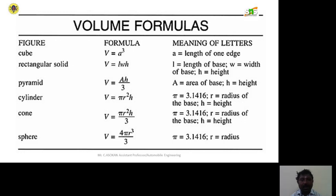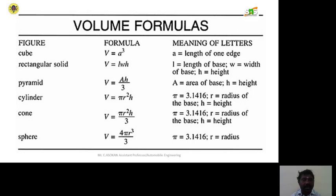For the pyramid, A equals the area of the base and H equals the height. For a cylinder, the volume formula is pi r squared h, where pi equals 3.1416 or 22 divided by 7, and r equals the radius of the base.